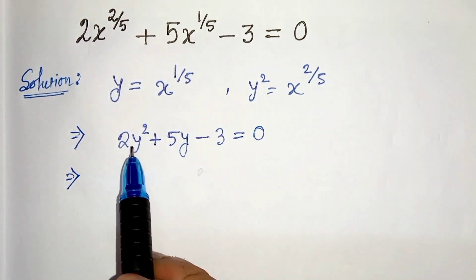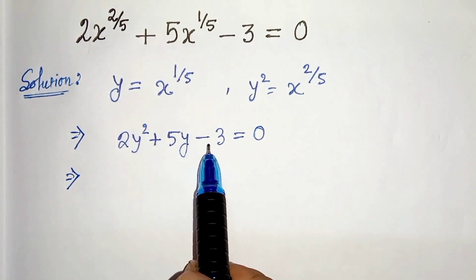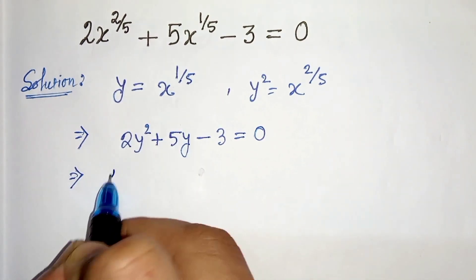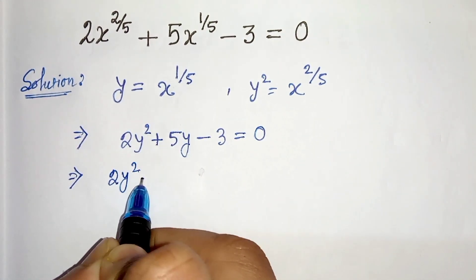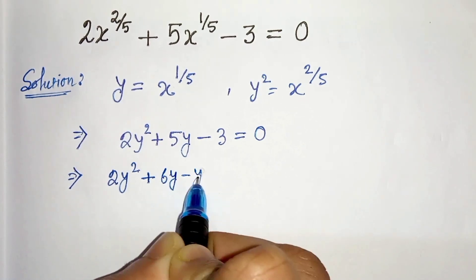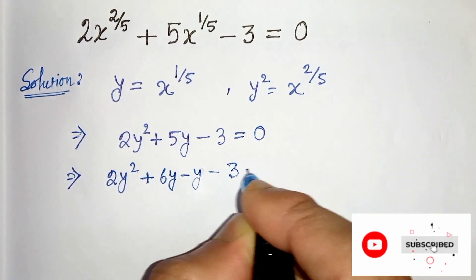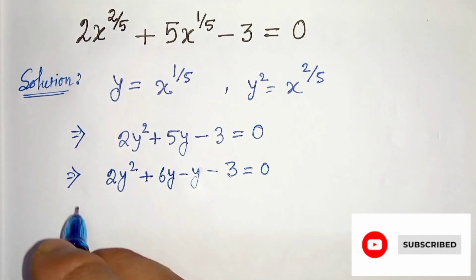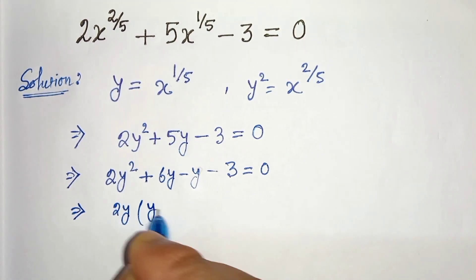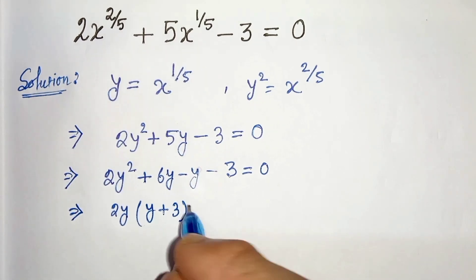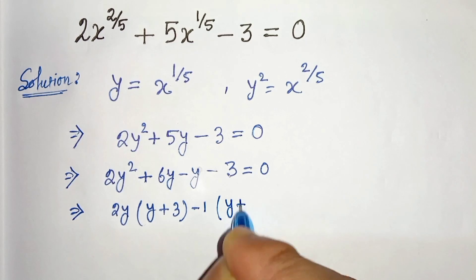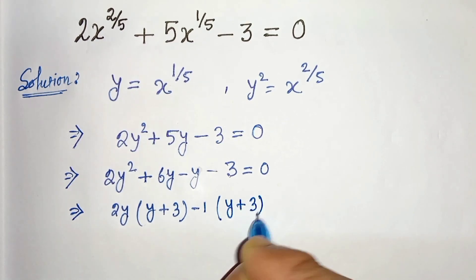Here our product is minus 6 (2 into minus 3) and the sum is 5. To factorize this we will take 2y squared plus 6y minus y minus 3 equals to 0. Now we can take common 2y, so it will be y plus 3, and from here we will take common minus 1, so it will be y plus 3 equals to 0.